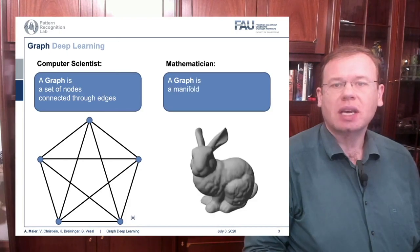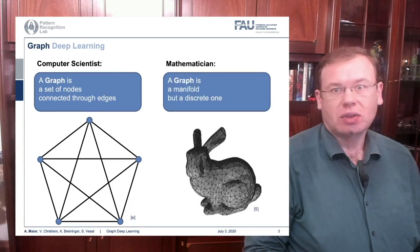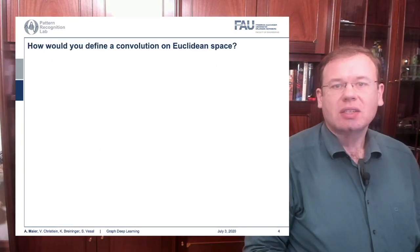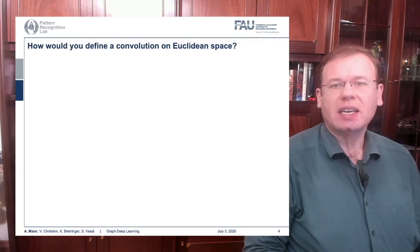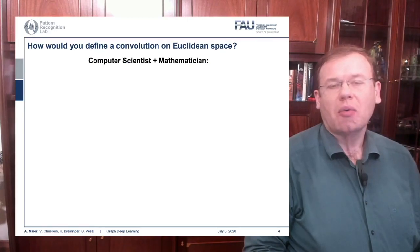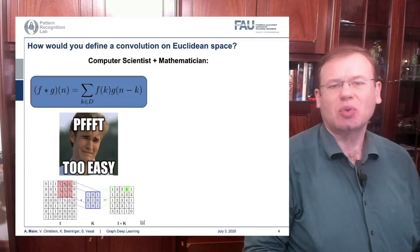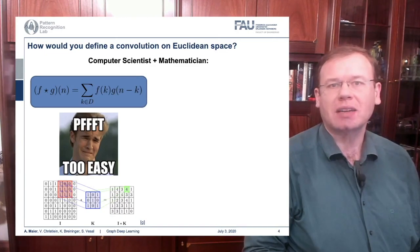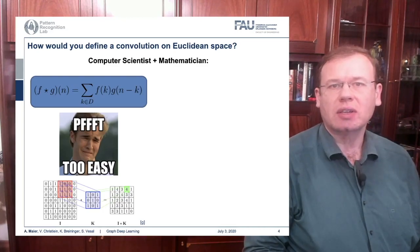For a mathematician, a graph is a manifold, but a discrete one. So how would you define a convolution on Euclidean space? Well, both for computer scientists and mathematicians, this is too easy. This is the discrete convolution, which is essentially just a sum — and we remember we had many of those discrete convolutions when setting up the kernels for our convolutional deep models.